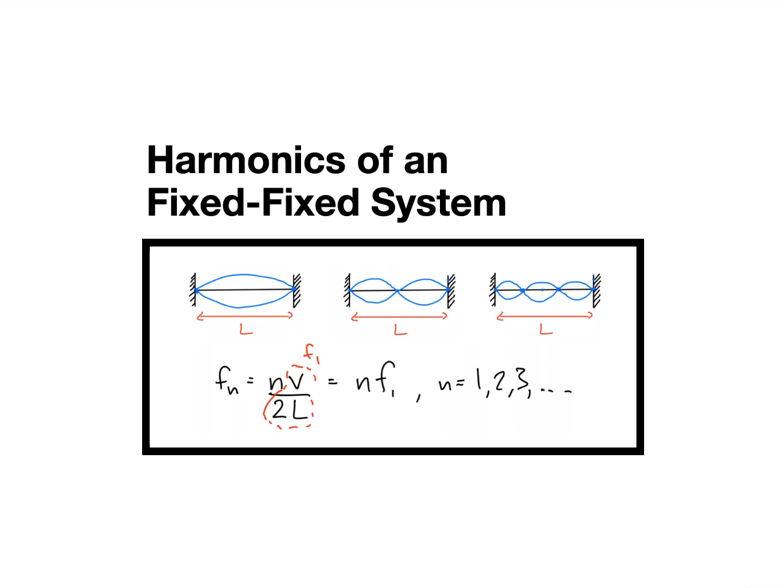Hello everyone. I'd like to talk about this fixed-fixed standing wave system. This is a really common system that's used as a model for standing waves. By far the most common example of it is a guitar string or a violin string, some string that is vibrating between two fixed ends. A lot of waves are described by fixed-fixed standing waves.